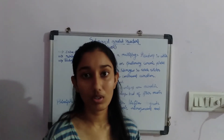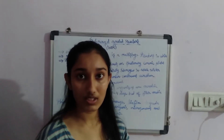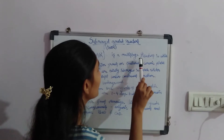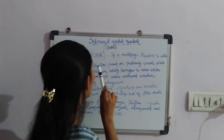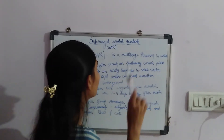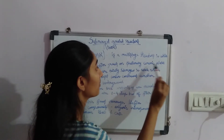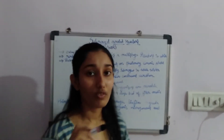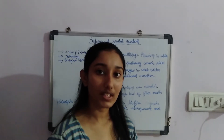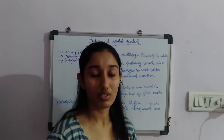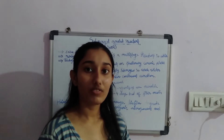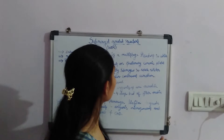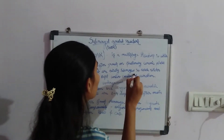The submerged aerated reactor is a multi-stage reactor in which biofilm grows on stationary ceramic plates. It is a multi-stage reactor with different processes at different stages. These reactors are totally submerged — totally submerged meaning unlike some reactors like rotating biological contactors.